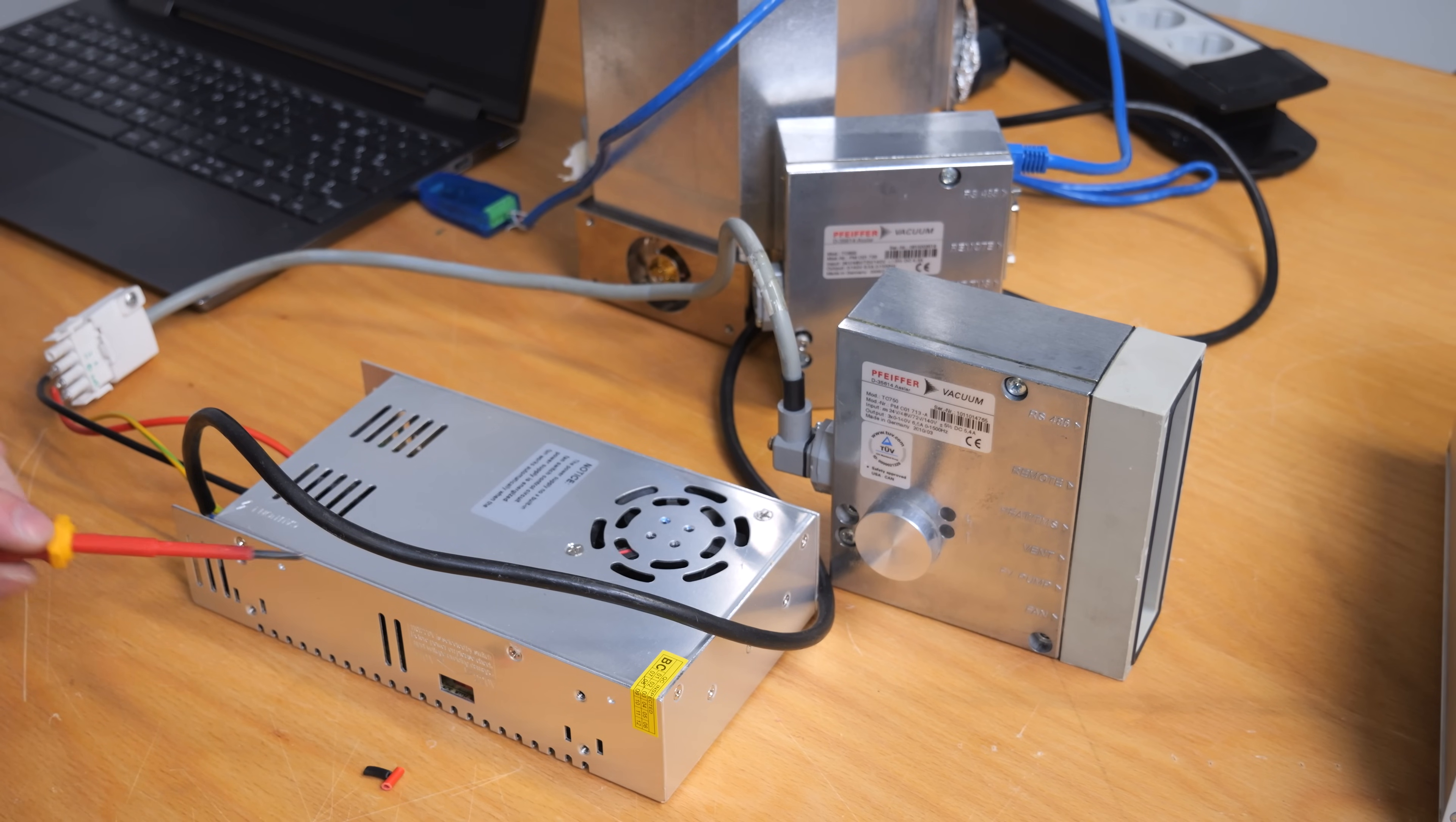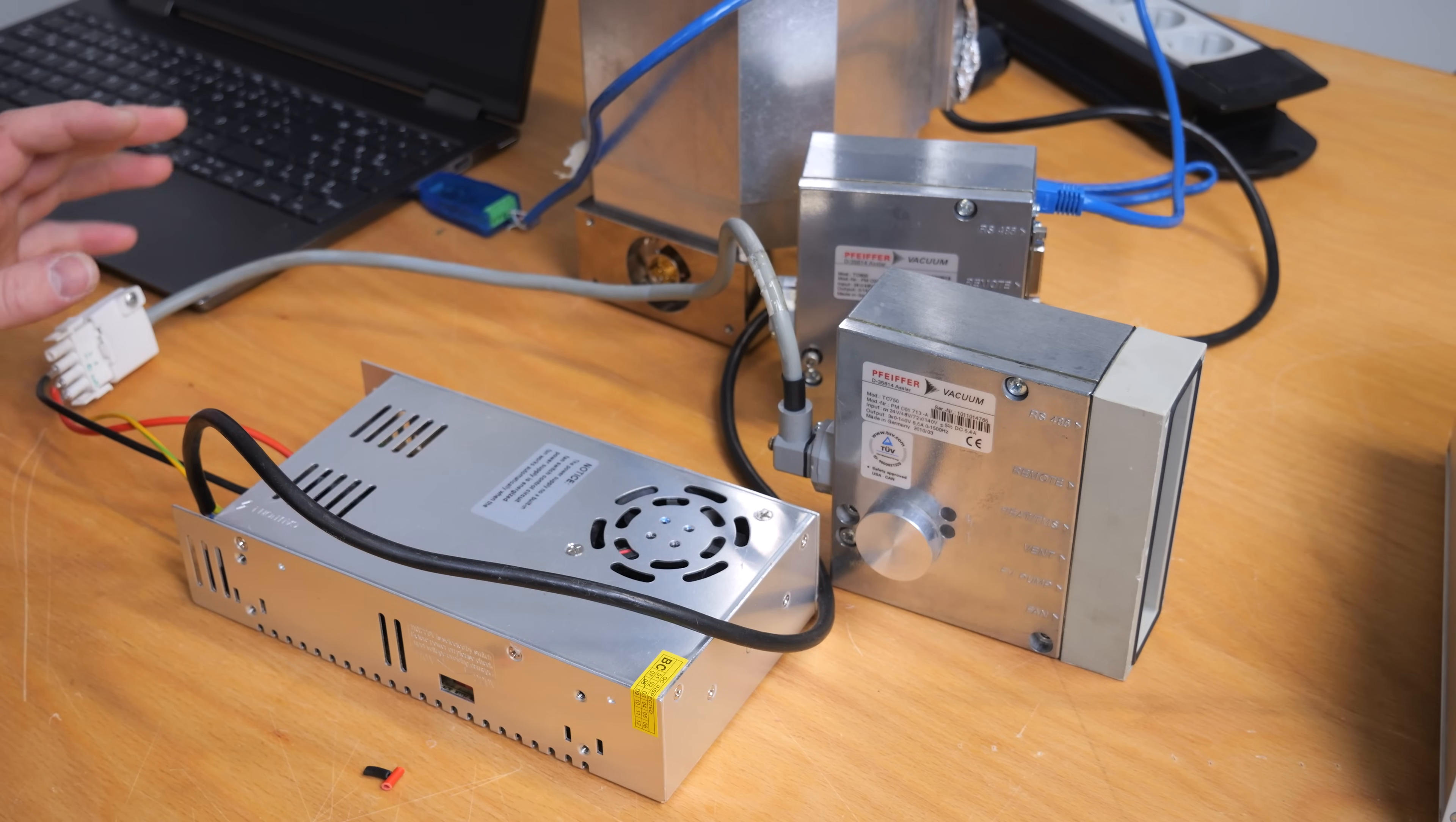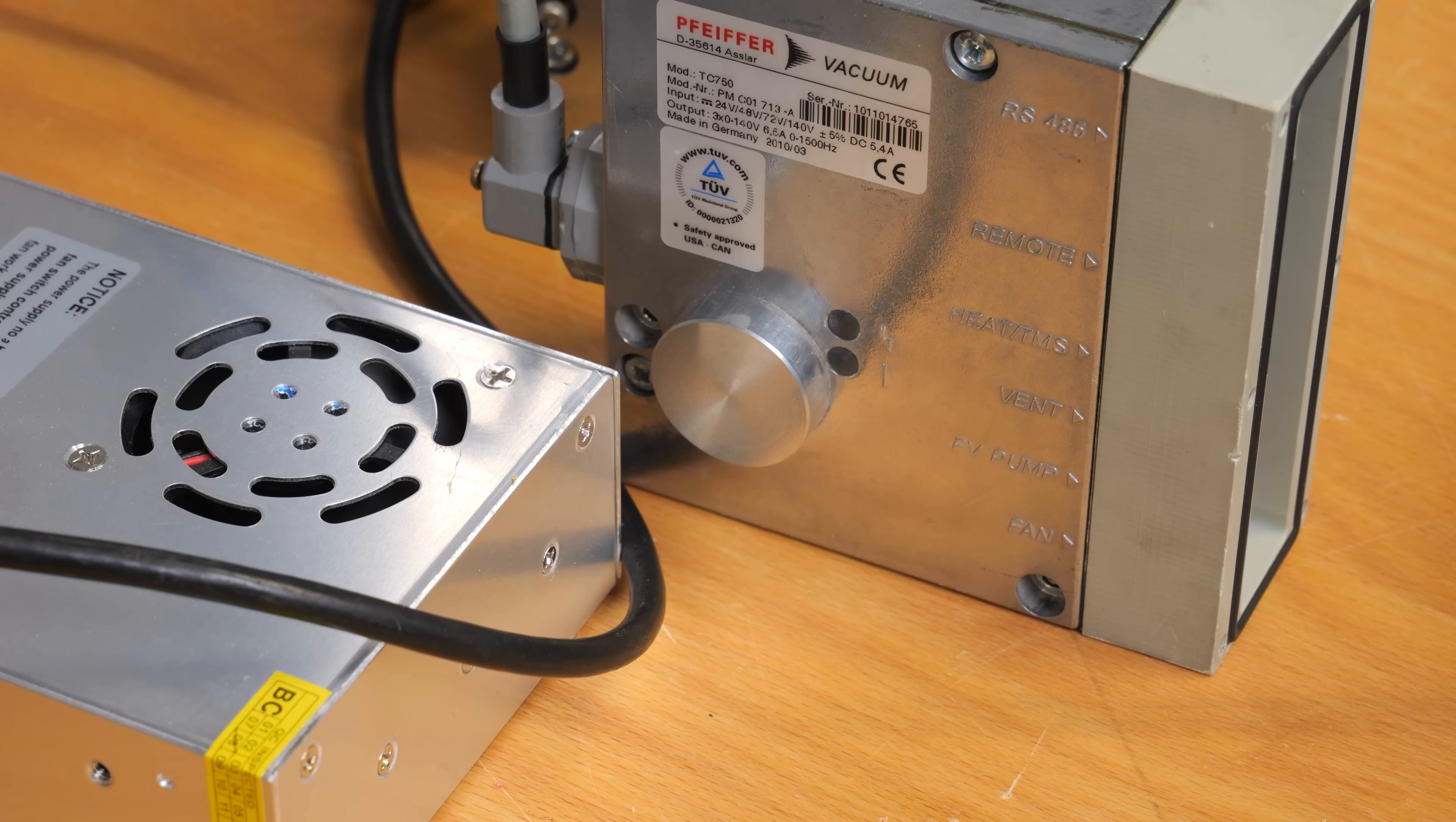Okay, I have connected a 24-volt power supply to, in this case, the TC750 controller because I have two of those but I only have one TC600 controller. And it wouldn't be the first time for me to mess something up regarding the wiring. So I will test it with this one first. Oh yeah, we're getting a light. Great, so now let's try this with the other controller.